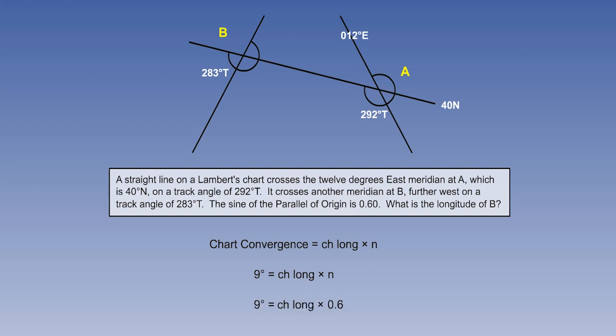And the question has told us that little n is 0.6. So the change of longitude is 9 divided by 0.6. This is 15 degrees. So if A was at 12 east, and B is 15 degrees further west, it must be at 003 degrees west.